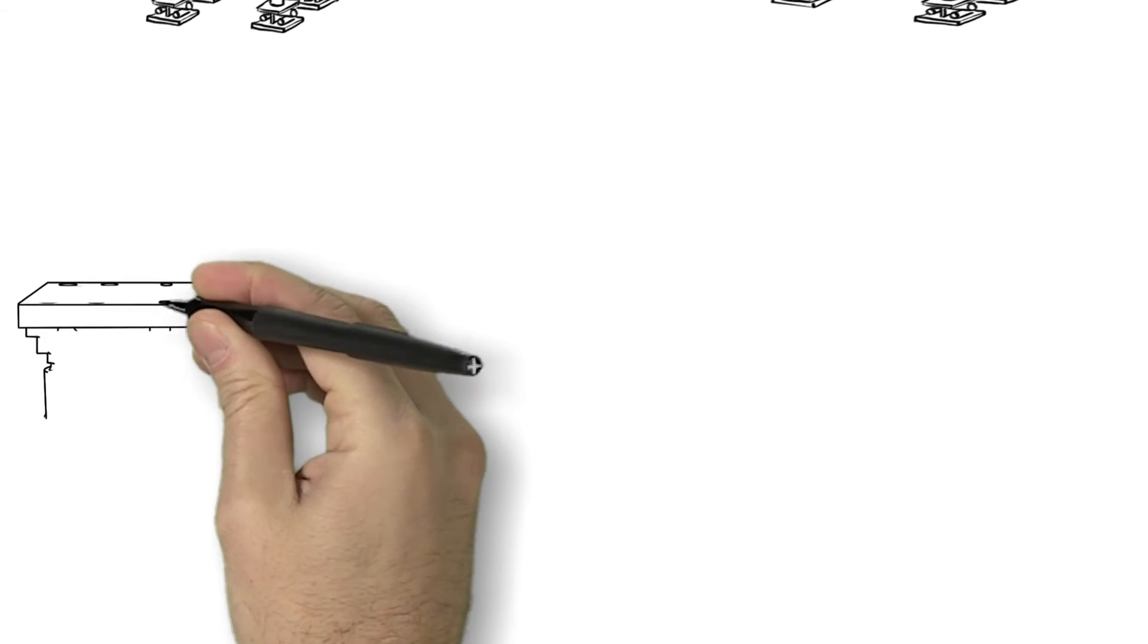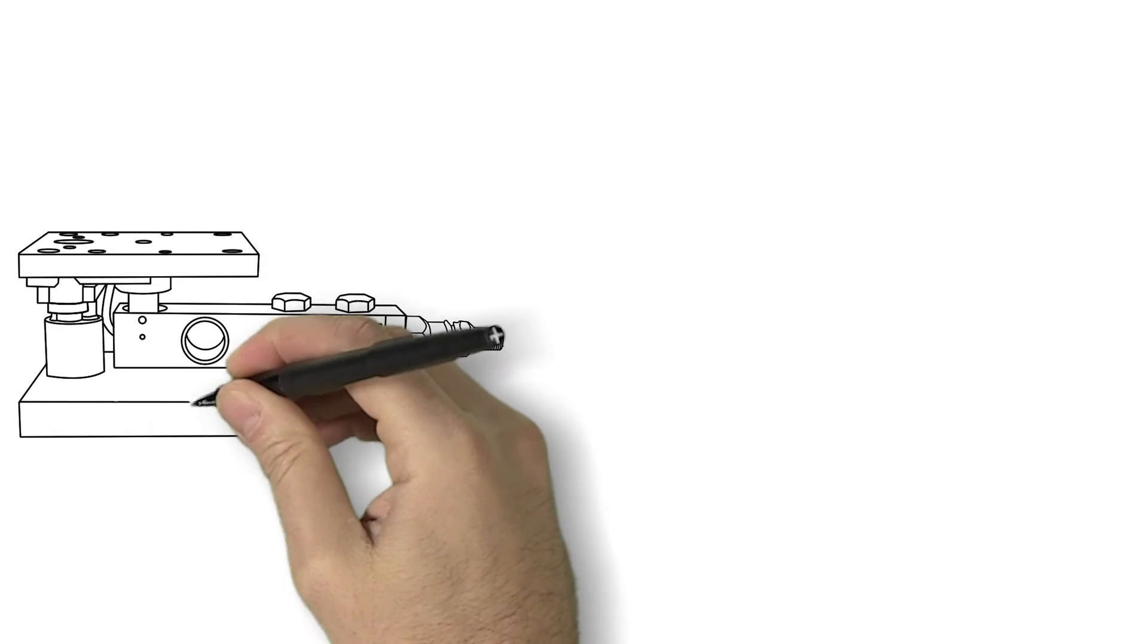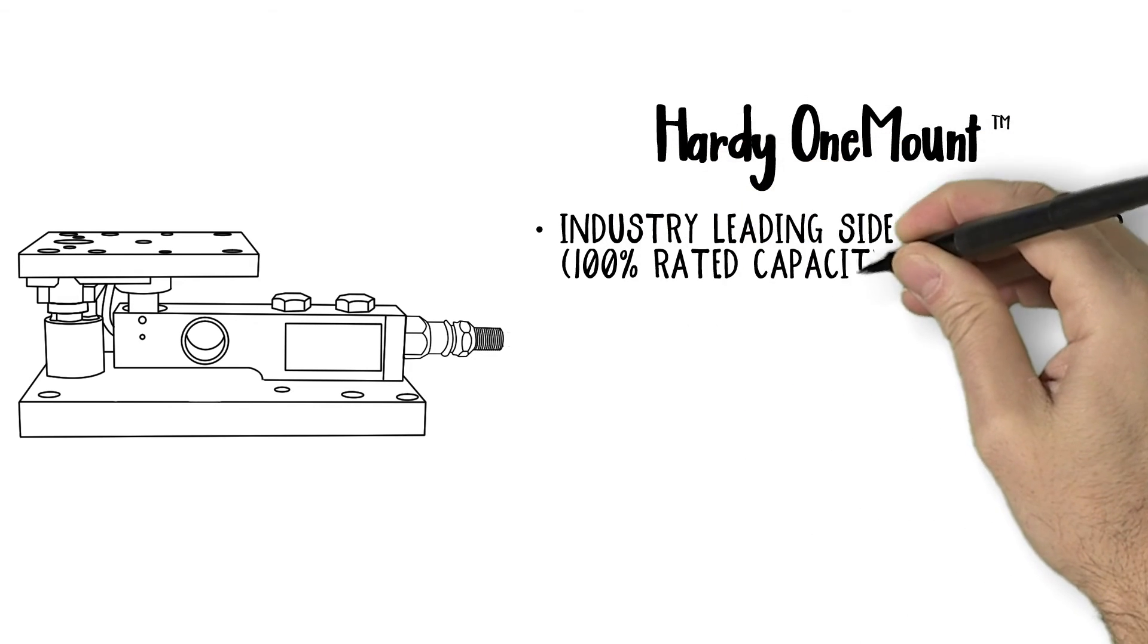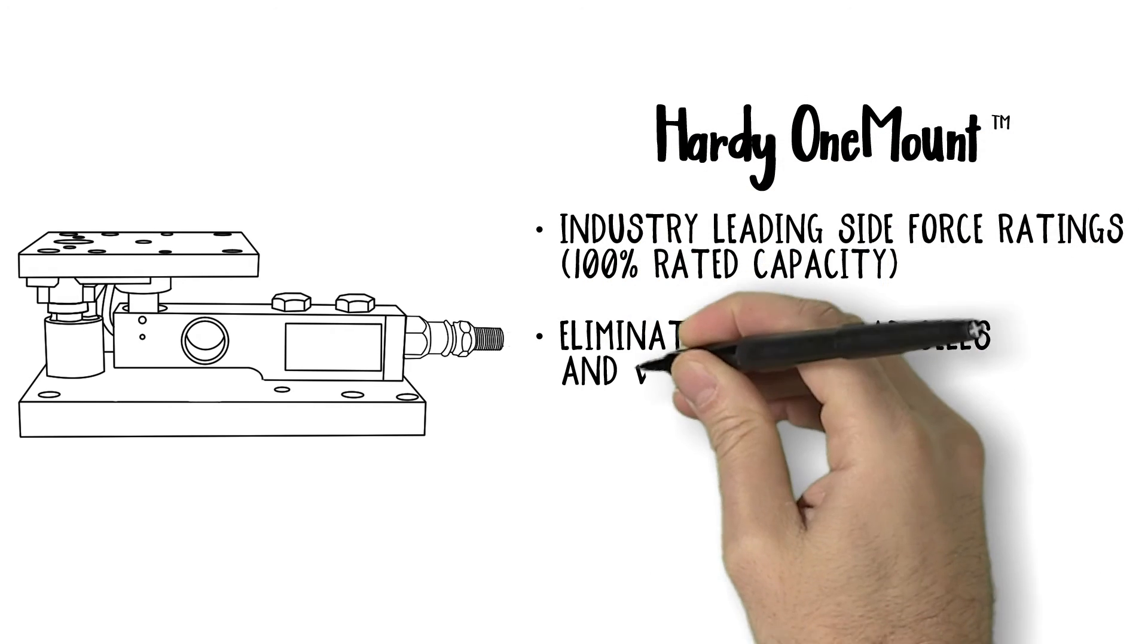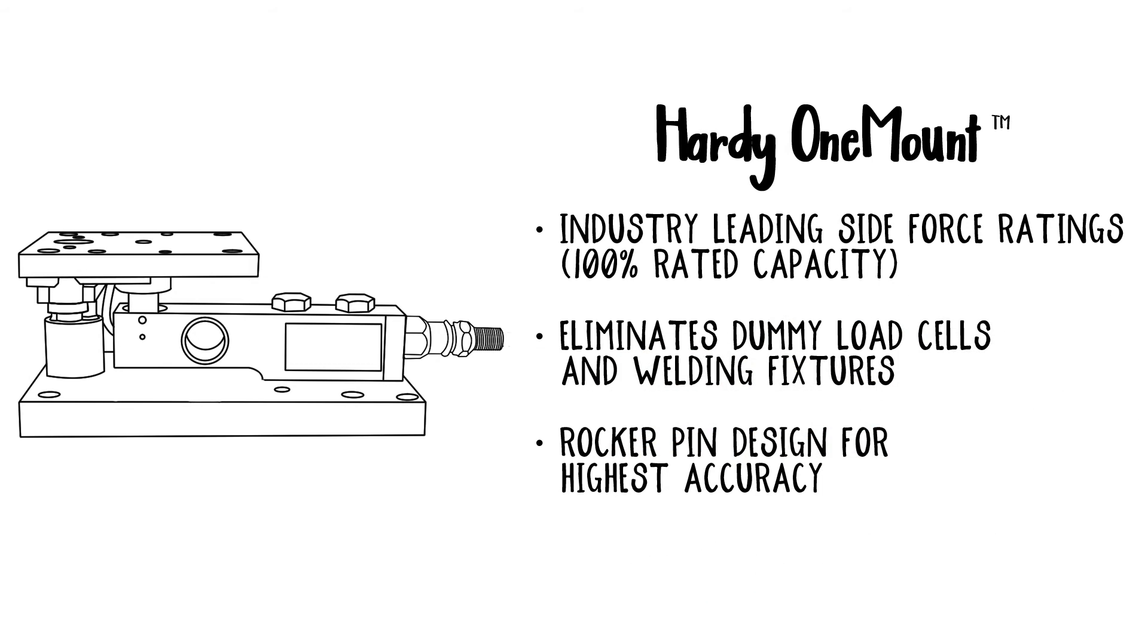The new Hardy One Mount delivers the highest accuracy, safety and ease of use in the industry. Combined with Hardy process toolbox features like C2 electronic calibration, eliminating the need to use calibration weights, the One Mount is intentionally designed to save you time and money.